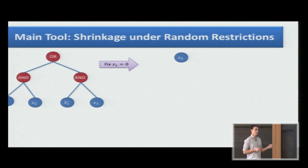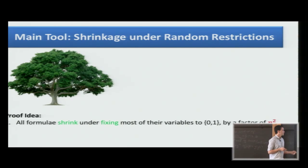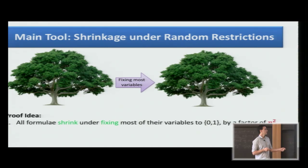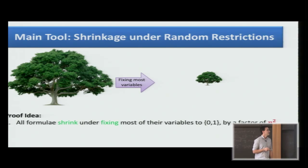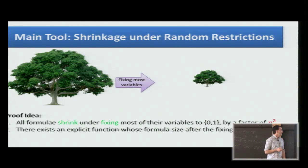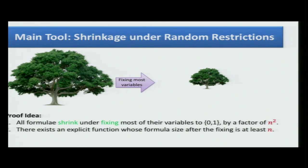Håstad shows that this is no coincidence. This happens under some random process. The proof idea uses two ingredients. First is that all formulas shrink under fixing most of the variables by a factor of n squared. We have a tree, we are fixing most of the variables, the tree shrinks.